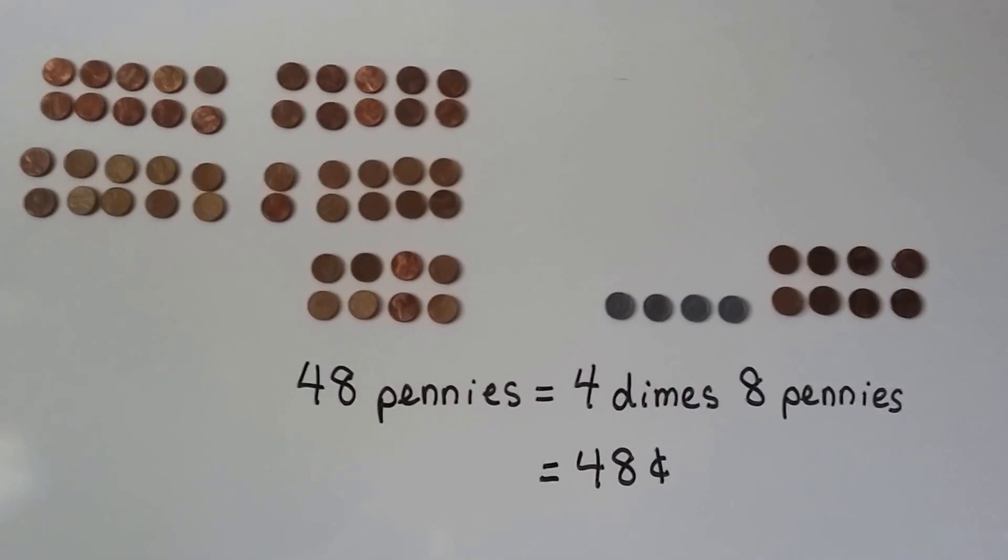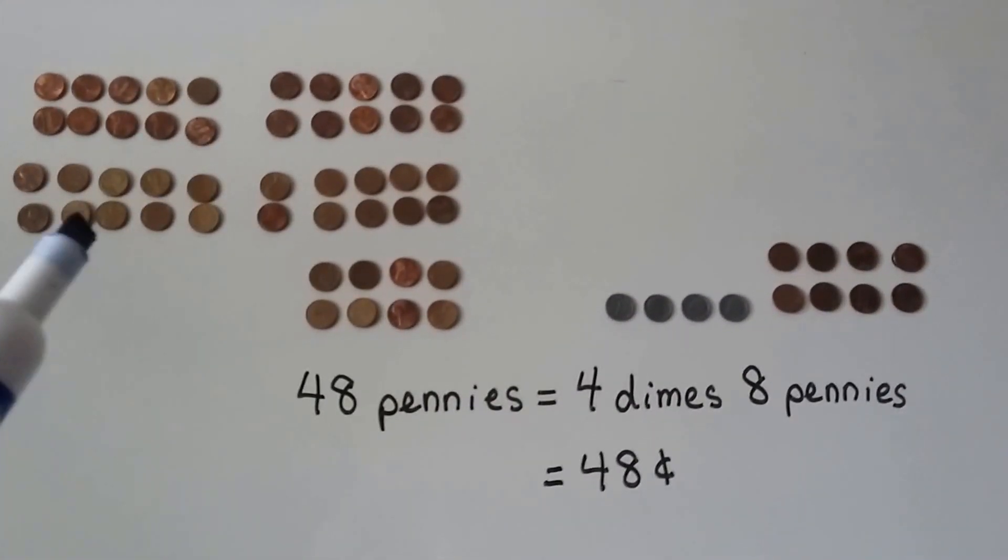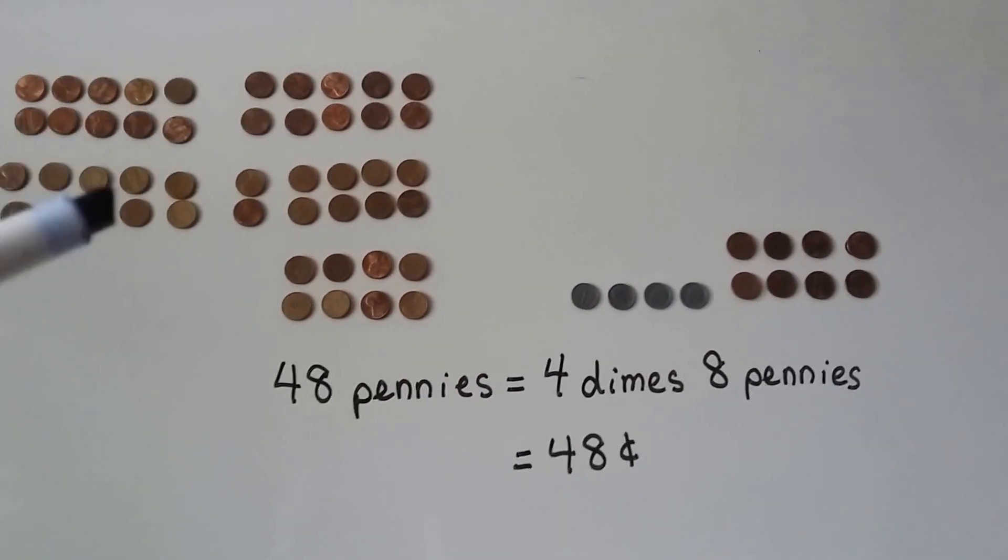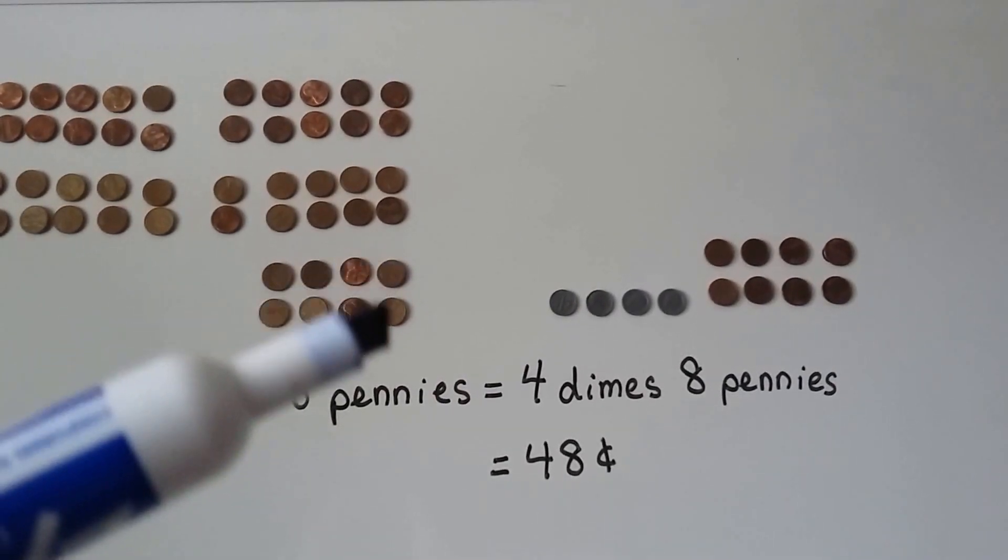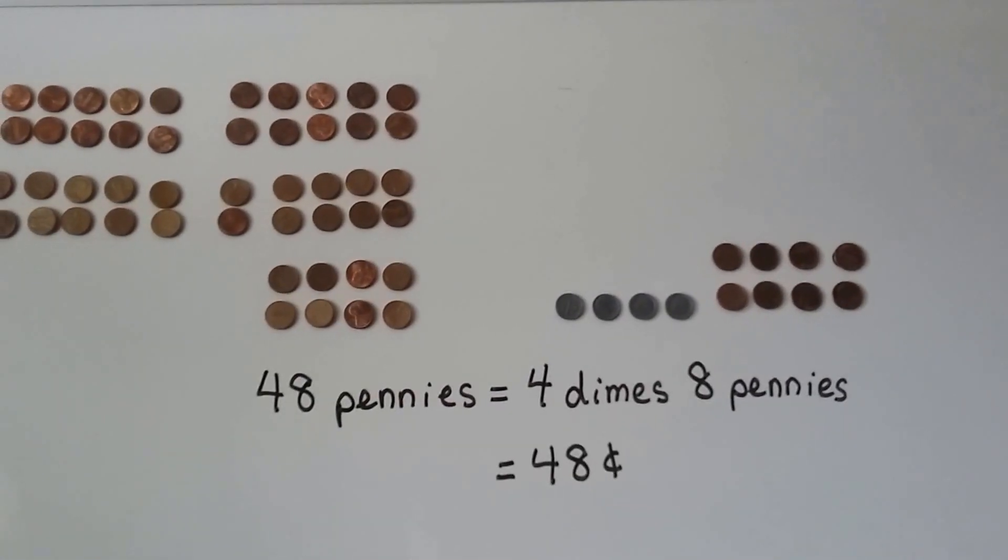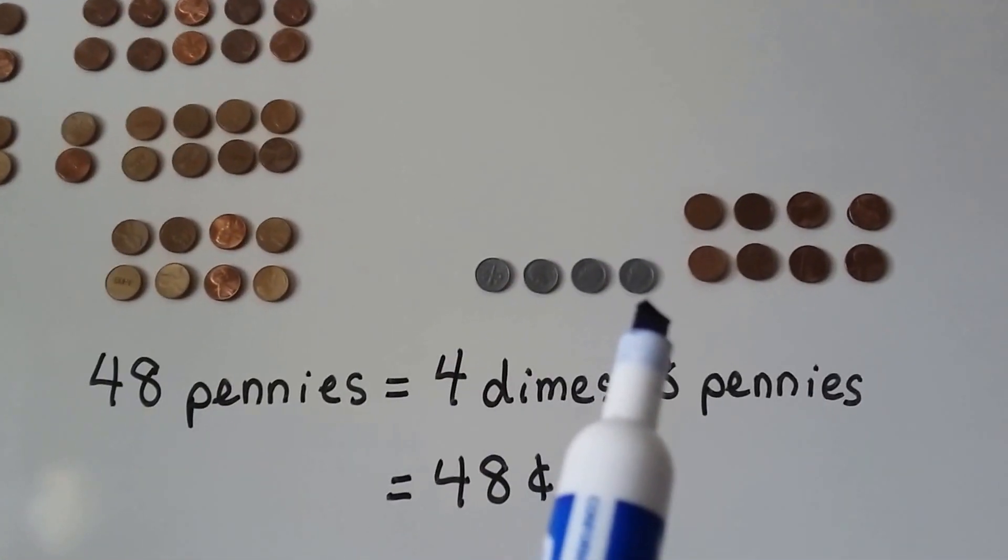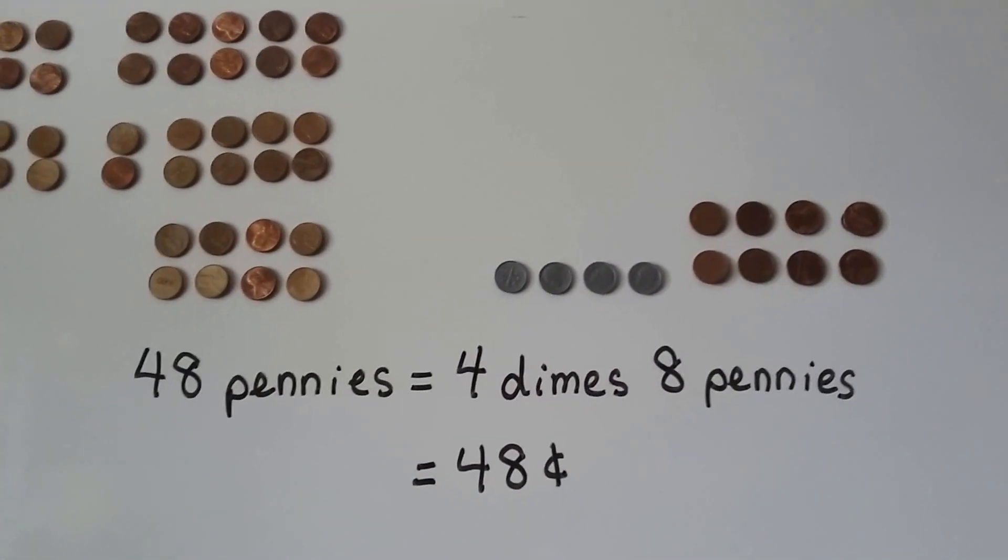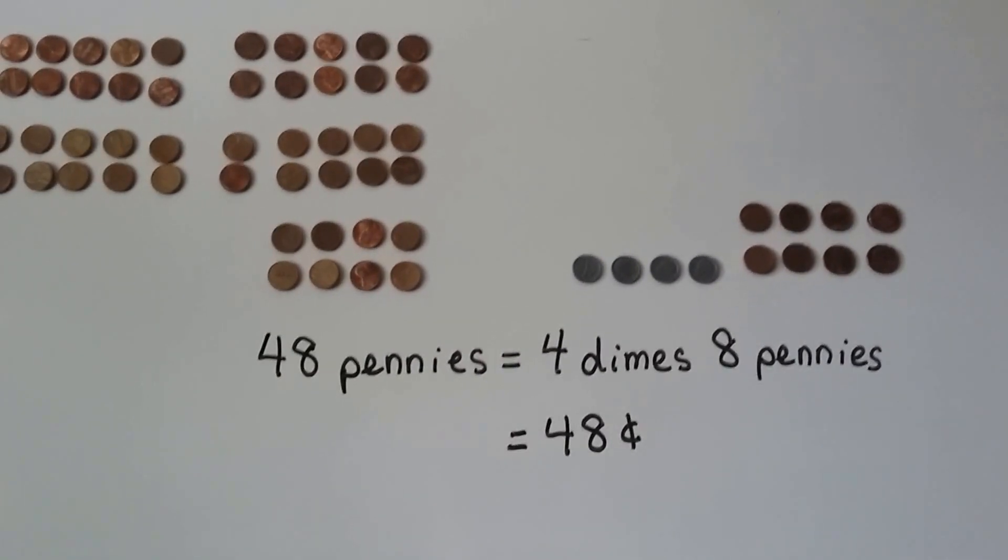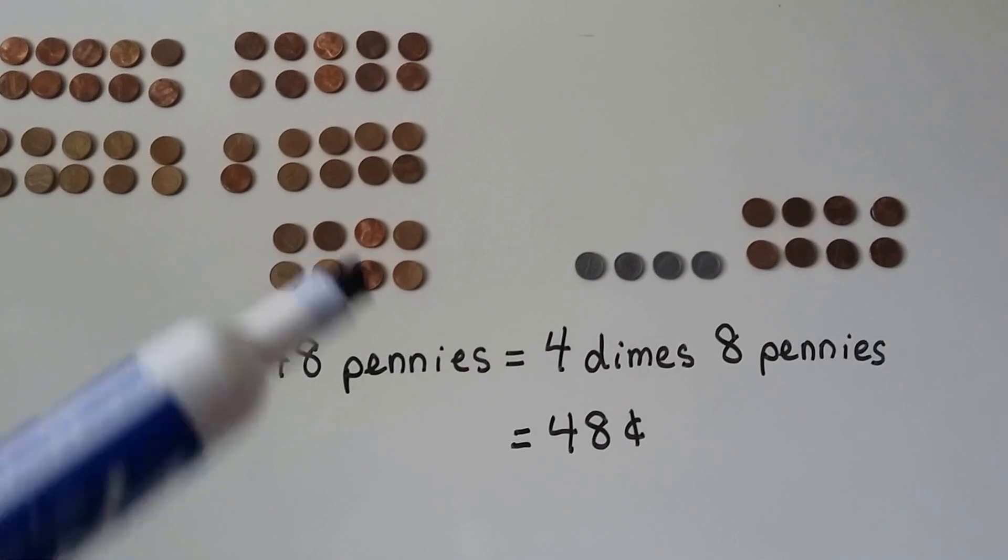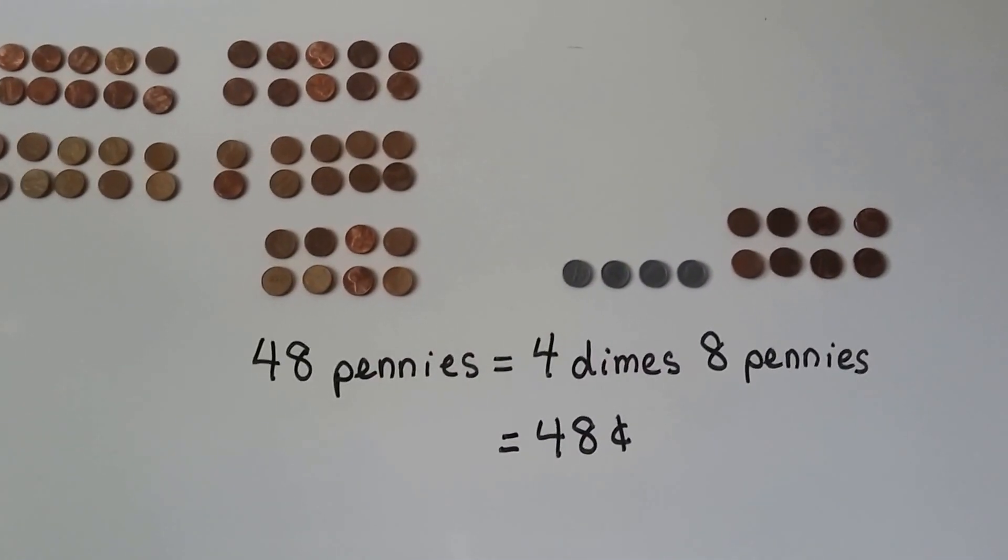Look at all these pennies on this side. We have 48 pennies: 10, 20, 30, 40, 41, 42, 43, 44, 45, 46, 47, 48. That's 48 pennies. It's equal to four dimes and eight pennies. That's 48 cents. We have four tens—one, two, three, four—and eight ones. That's four tens and eight ones, 48 cents.